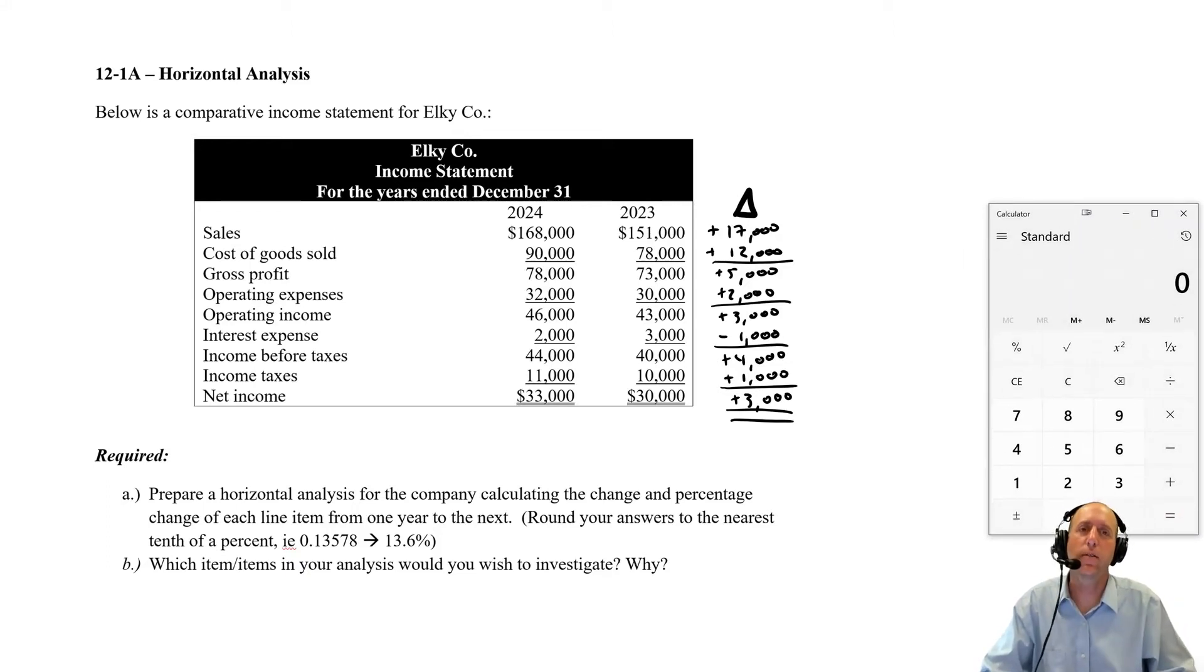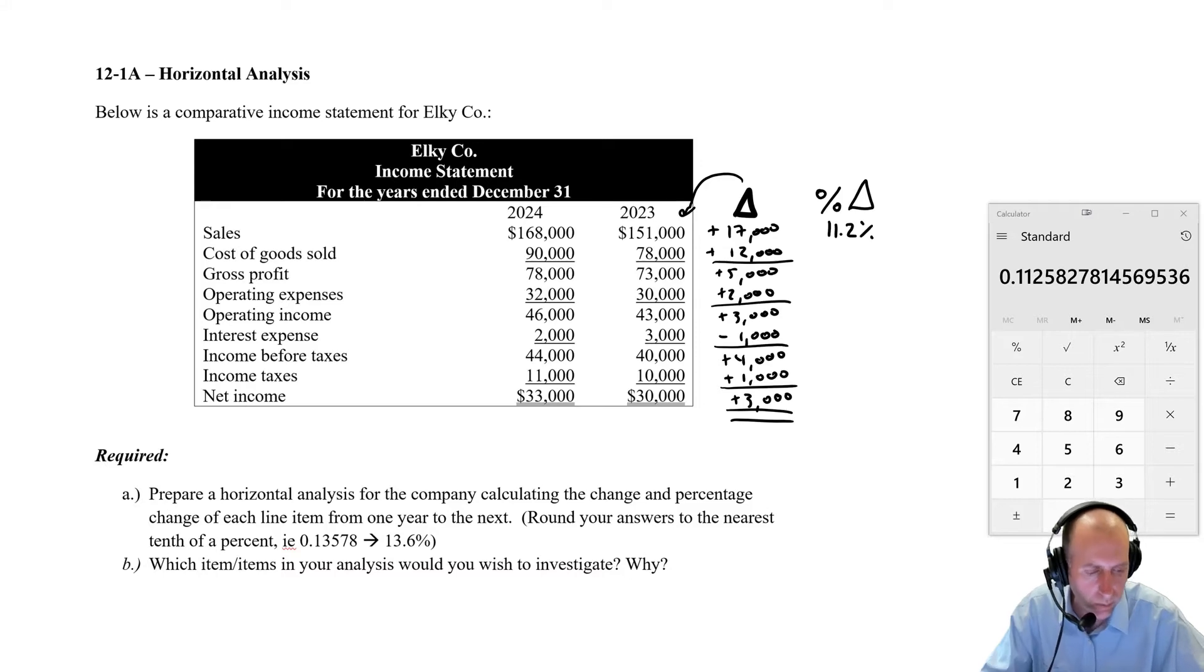So the change is relevant. But what's even more useful, and you'll see this stated very commonly, is the percentage change year over year. To compute a percentage change, you just take that change number and divide by the earlier year. So for example, for my sales, the change was $17,000. I'm going to divide by the sales of the earlier year, 151. And I'm going to say, hey, my sales are up 11.2, actually 11.3. I'm rounding the wrong way here. 11.3%.